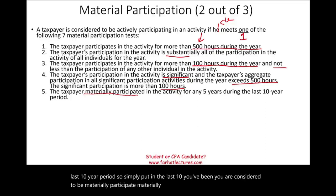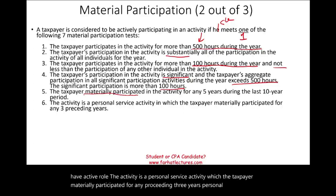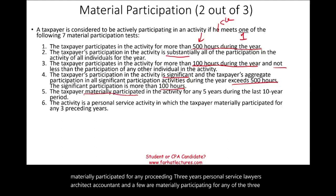Test six: the activity is a personal service activity in which the taxpayer materially participated for any preceding three years. Personal service includes lawyers, architects, accountants — and if you materially participated for any of the three preceding years, you are still considered an active business owner.